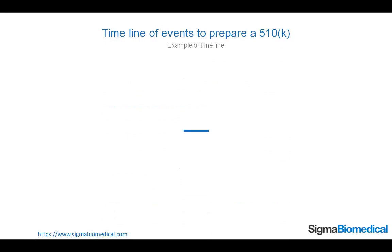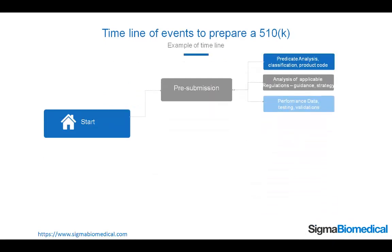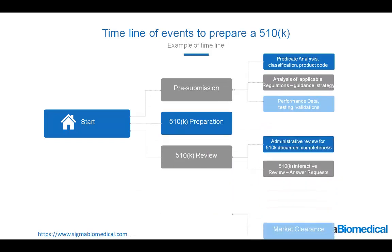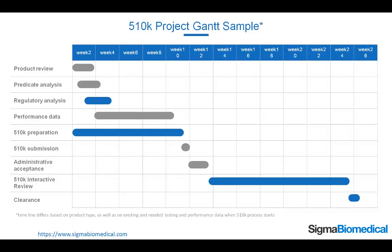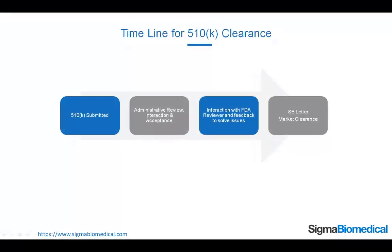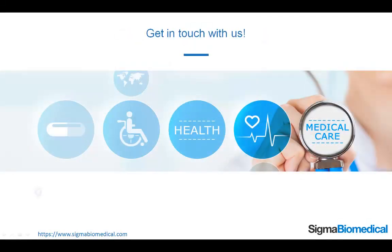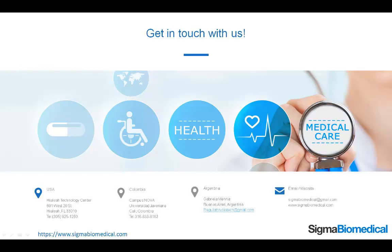Timeline of events to prepare a 510k. This is an example timeline. 510k project Gantt sample — here we present some example tasks and their duration. The timeline shown differs based on product type as well as on existing and needed testing and performance data when the 510k process starts. Timeline for 510k clearance: it starts with a 510k submitted, then administrative review, interaction and acceptance, then interaction with an FDA reviewer and feedback to solve issues, and finally the SE letter and market clearance. Get in touch with us at www.SigmaBiomedical.com.